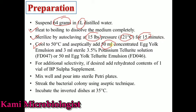Or we can use 50 ml of egg yolk tellurite emulsion. Once these contents are added, to make it selective, we then add the rehydrated content of one vial of BP sulfur supplement. This makes the media selective, and due to this only Staphylococcus aureus can easily grow. After that we mix it well before pouring.